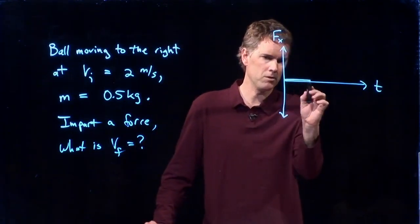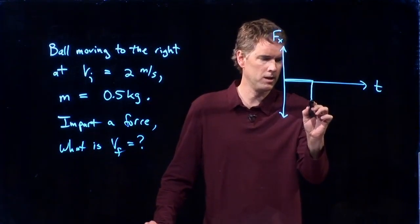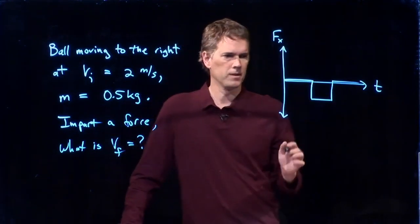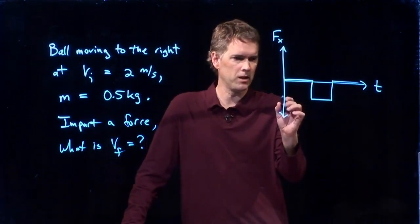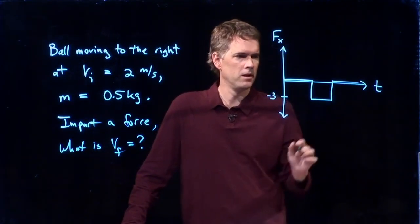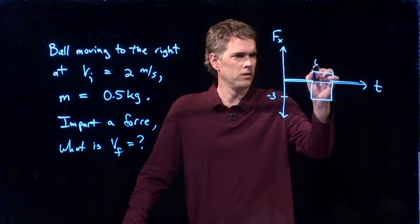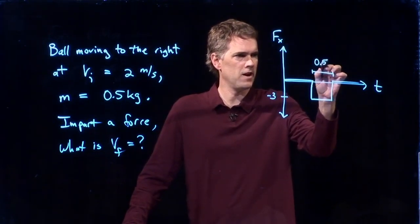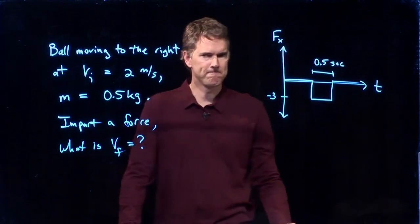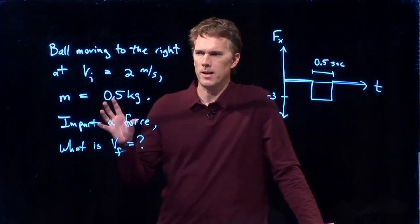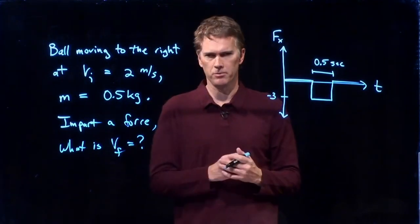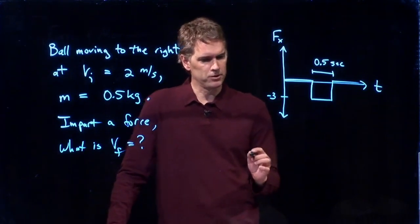Here is f sub x as a function of time. And we will say it is zero until this point. And then it drops down to some negative value. And then it goes back to zero. And we'll give you some numbers here. We'll say that this is negative three. And this time is 0.5 seconds. Ball moving to the right. We're going to apply this force to it. And we're going to see what the final speed is.